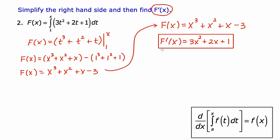If we had just gone right to the second fundamental theorem of calculus, we could replace every occurrence of t with x, giving us 3x squared plus 2x plus 1 immediately — exactly the same answer. So the second fundamental theorem of calculus allows us to very quickly come up with the answer, if and only if we're taking the derivative of an integral, the lower limit is a constant, and the upper limit is some expression that contains an x.